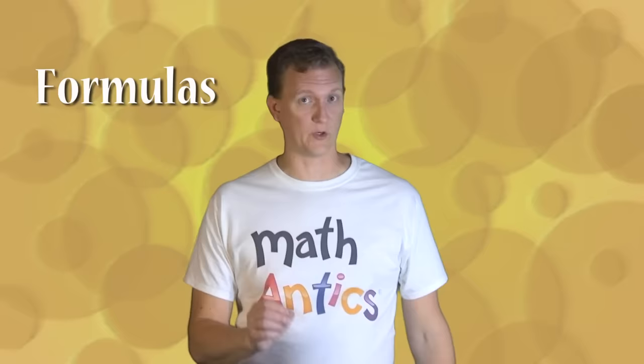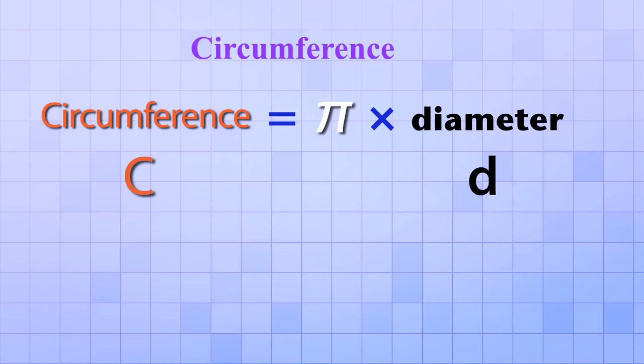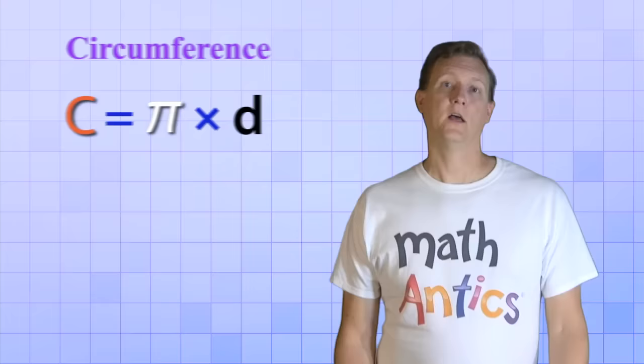The formulas that we use to calculate circumference and area are so important that you should really memorize them. To help you do that, we're going to look at them side-by-side, and that will help you see their similarities and their differences so you don't get them mixed up. The formula for finding the circumference is circumference equals Pi times diameter. And just like most formulas, we use abbreviations: C for circumference and D for diameter.